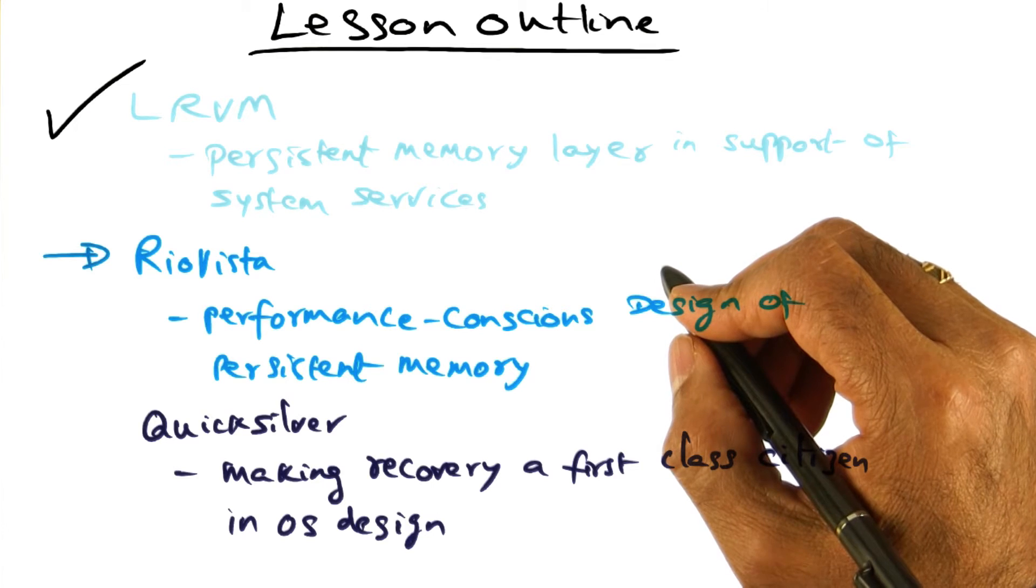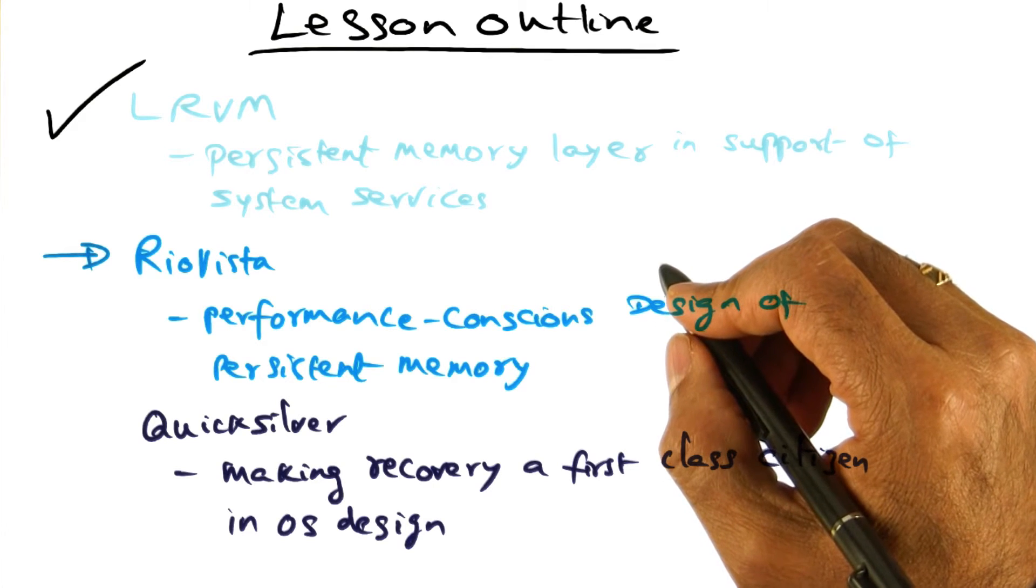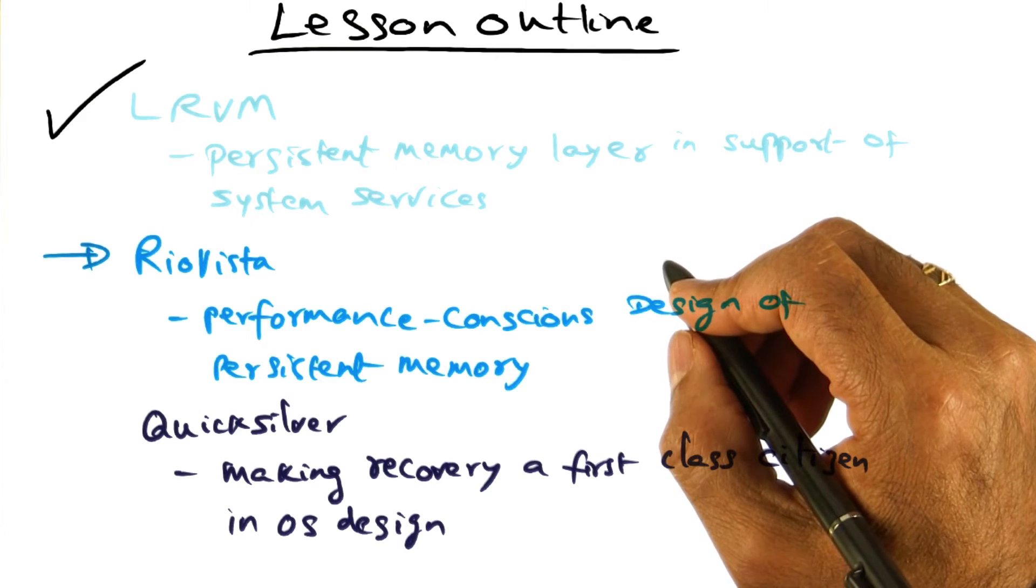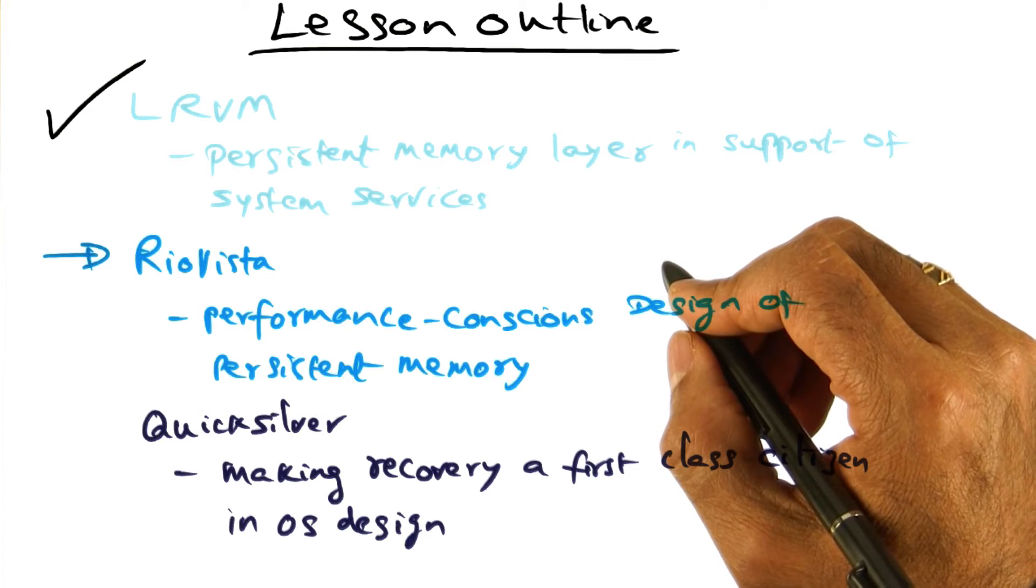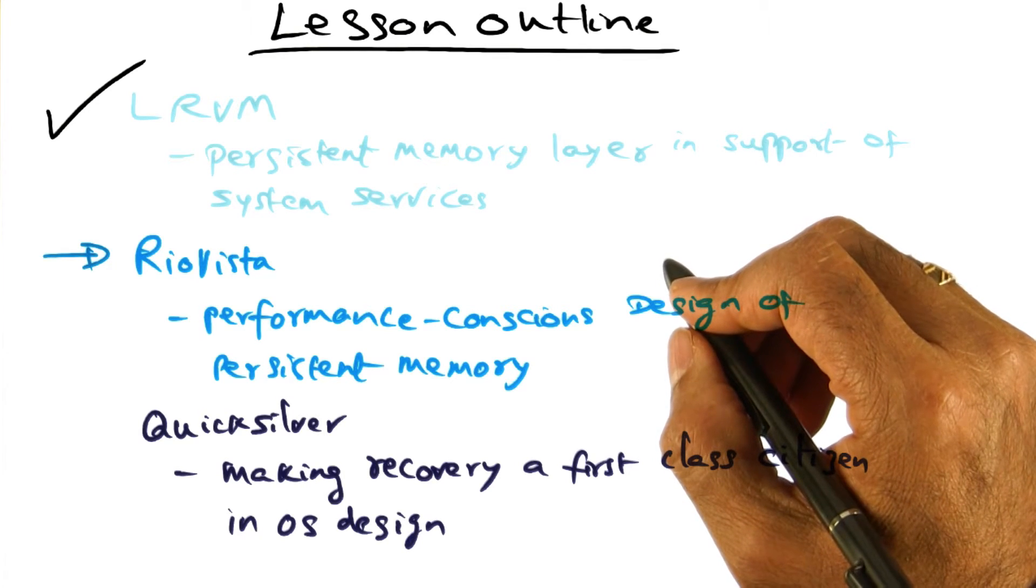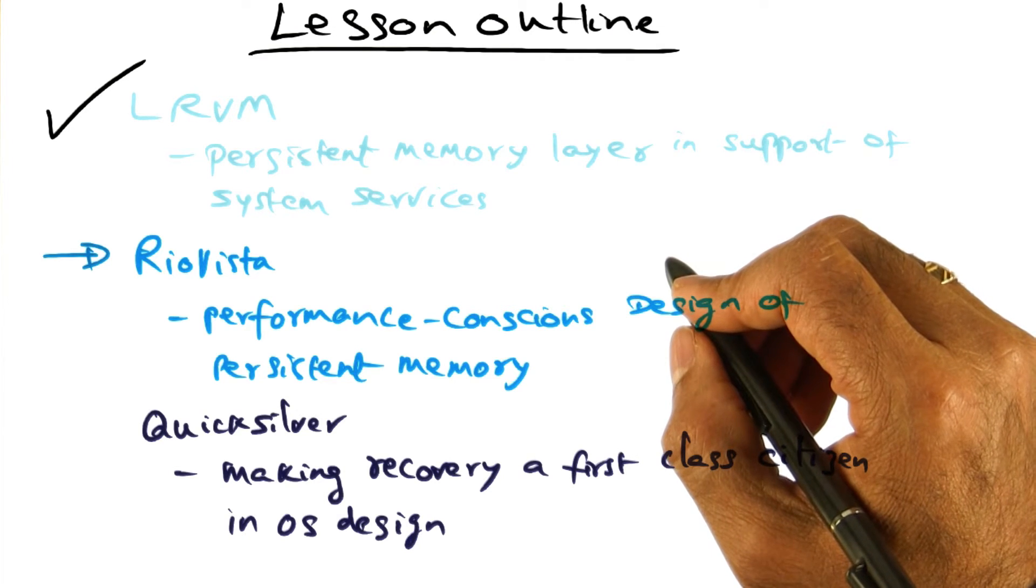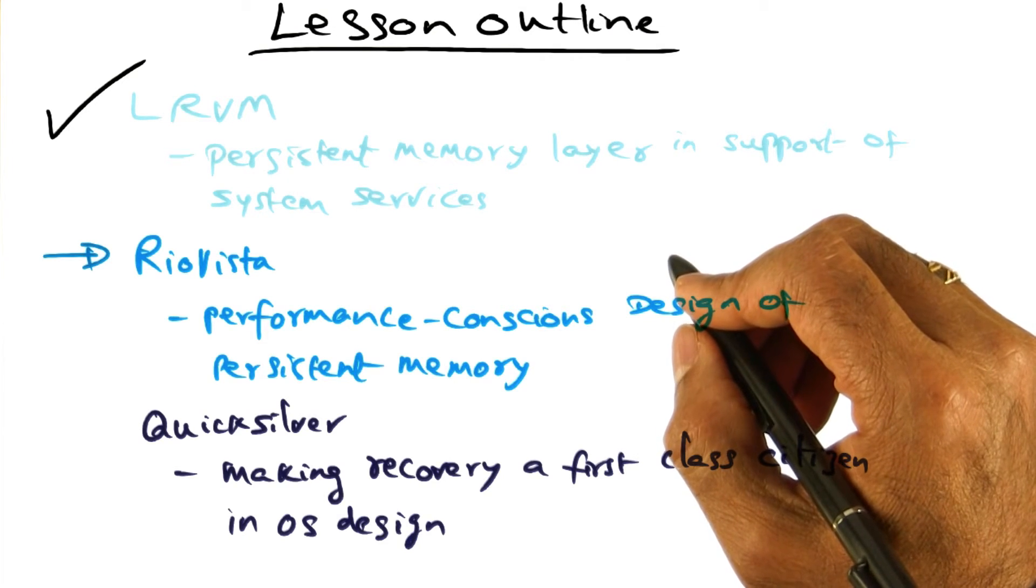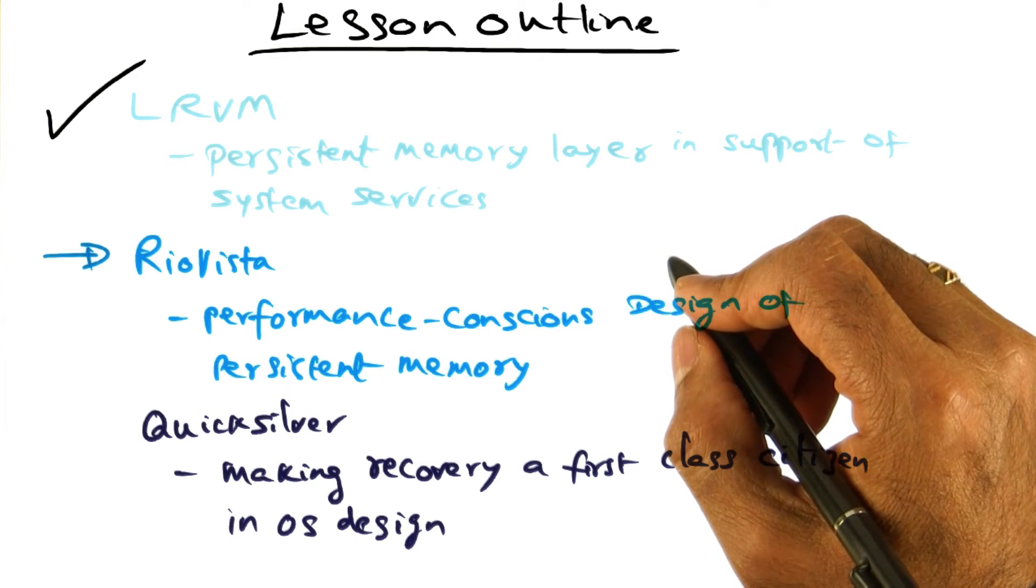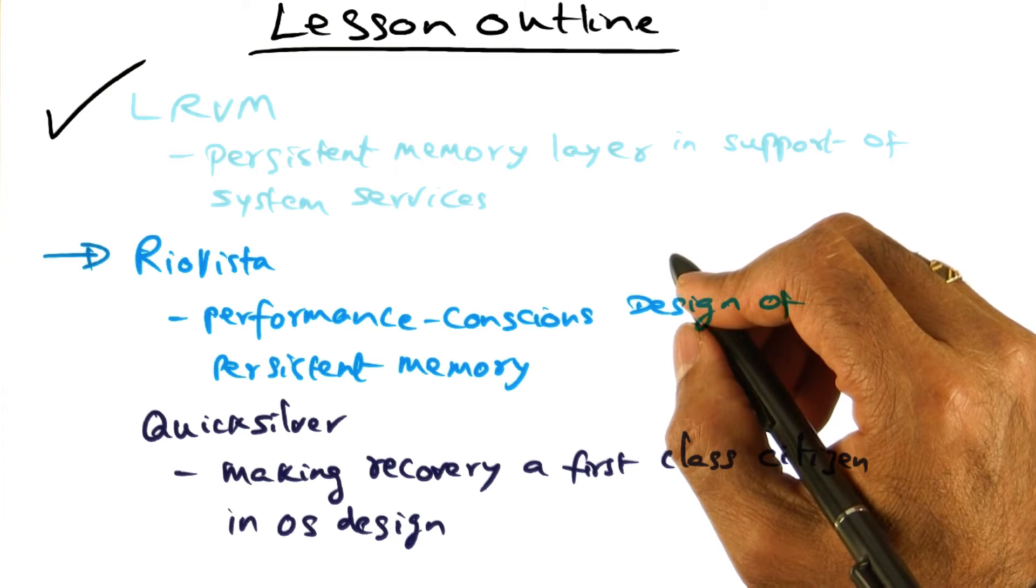A precise implementation of the transaction semantics of LRVM requires a log force to the disk to make sure that the redo log, representing all of the changes made to virtual memory within the critical section bound by begin transaction and end transaction, is actually committed and persisted on the disk.